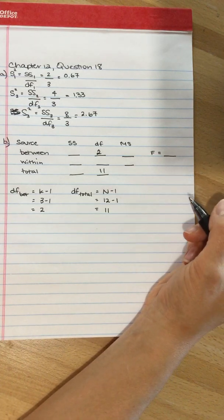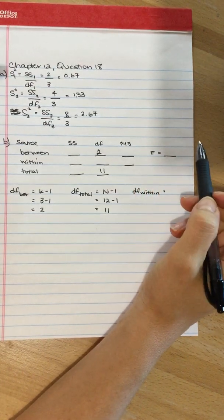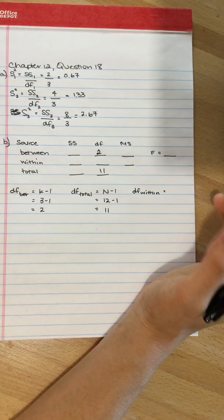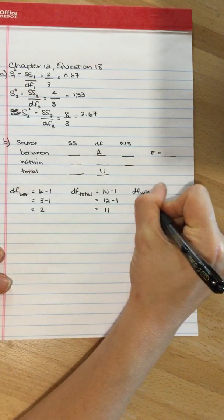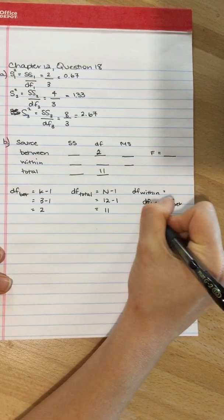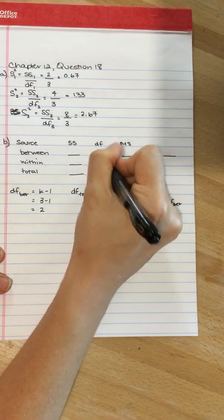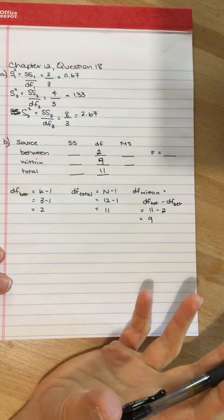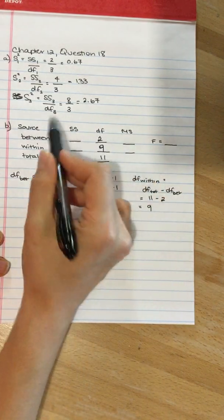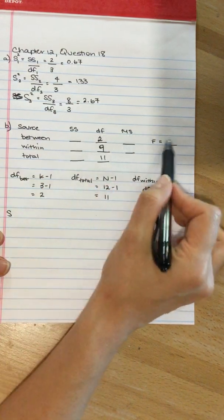There are various ways of calculating the degrees of freedom within. We could take the degrees of freedom one plus degrees of freedom two plus degrees of freedom three and add them up, or we can just realize that it's degrees of freedom total minus degrees of freedom between, which means that it is 11 minus two, which is nine. We get the same answer, which is good. Next we'll do the sum of squares, because without the sum of squares we can't get the mean square, and without the mean square we can't get the F.